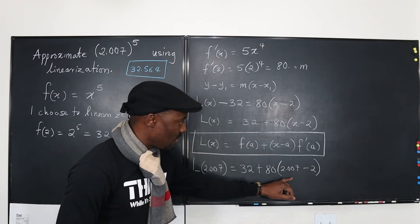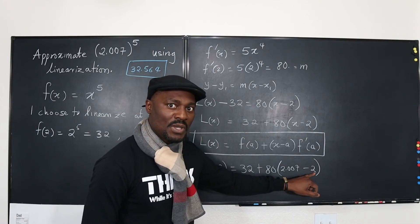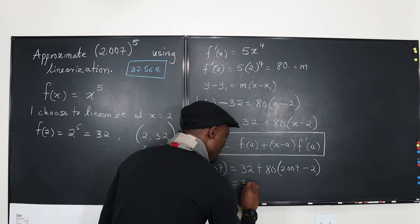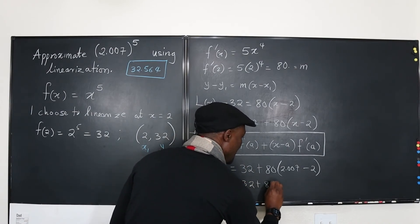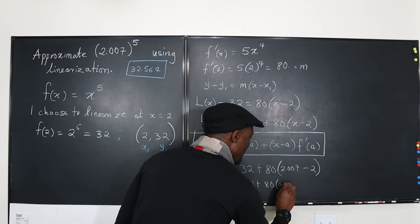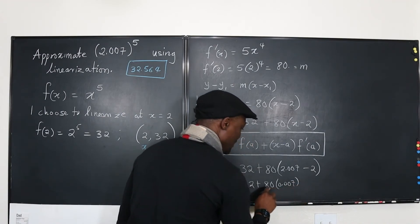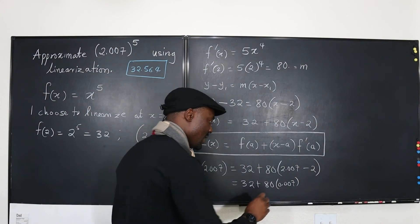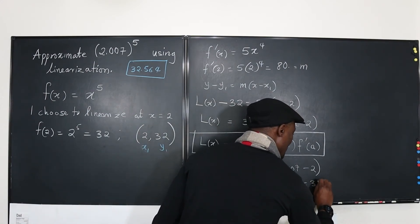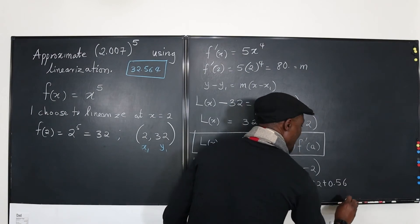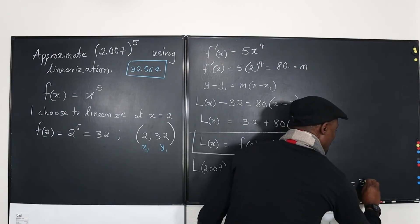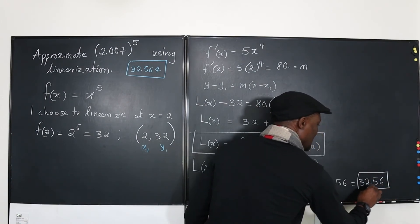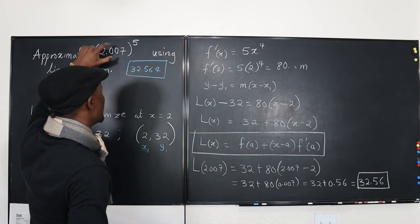2.007 minus 2 is going to be 0.007. So what we have is 32 plus 80 times 0.007. Well, if you multiply this, you'll find out that it gives us 0.56. So this is equal to 32 plus 0.56. And that answer is 32.56. This is the linearization of this expression.